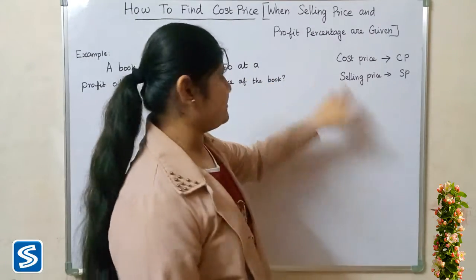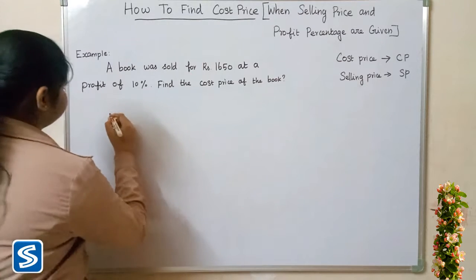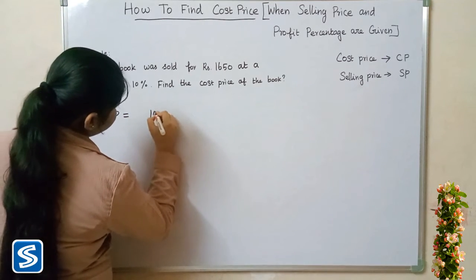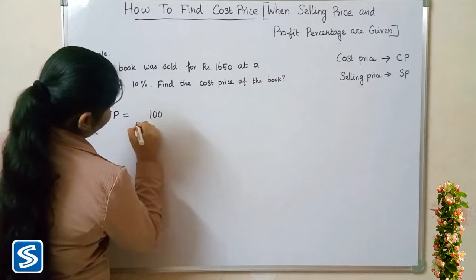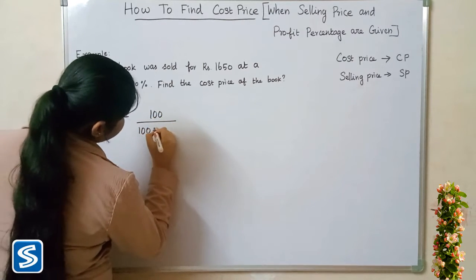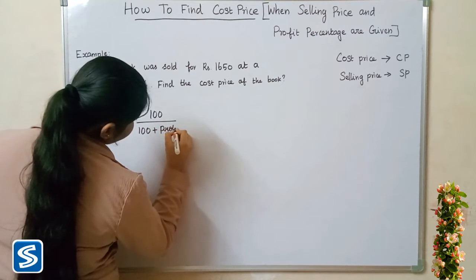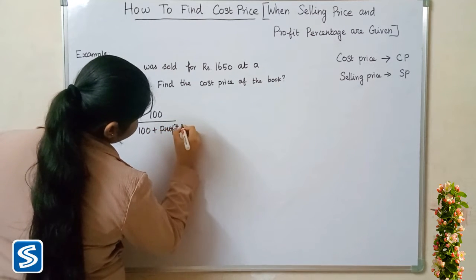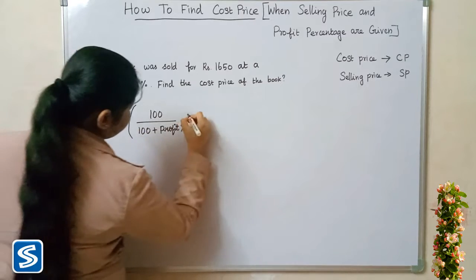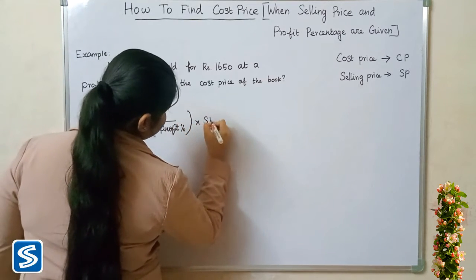To find the cost price when selling price and profit percentage are given, we use the formula: cost price is equal to 100 divided by (100 plus profit percentage), multiplied by selling price.